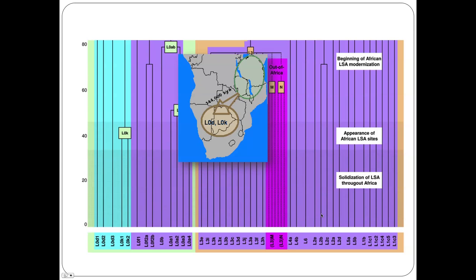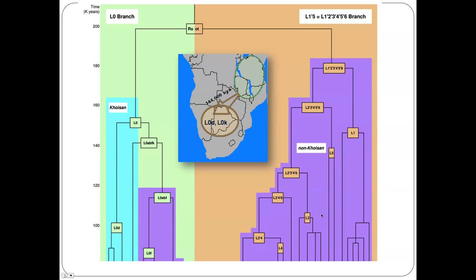There are mitochondrial haplotypes known as the L0 haplotypes — varieties L0D and L0K — that are particular to this group. Many of the things we see in the archaeological record of modernisation occurred long after the divergence of the San groups from others. According to this particular tree, between 140,000 and 160,000 years ago we get the divergence of the various L0 groups, and we place the root of all modern humans around 200,000 years ago.